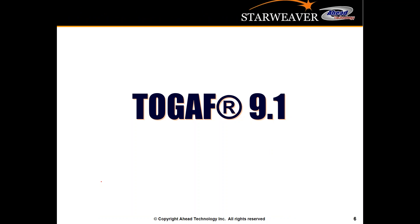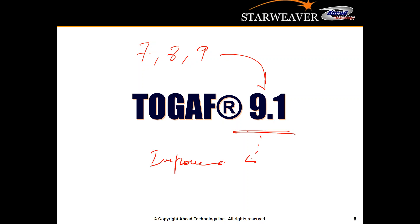TOGAF today is at version 9.1. Like any other best practice, over the years it evolved from version 7 to version 8 to version 9, and now we are at 9.1. There are a lot of discussions currently to improve the subject matter, and most likely we're going to see version 10 somewhere over the next 1.5 years or so. This is an effort to make sure it's always adaptable to market needs and requirements, especially as the industry is changing very fast.